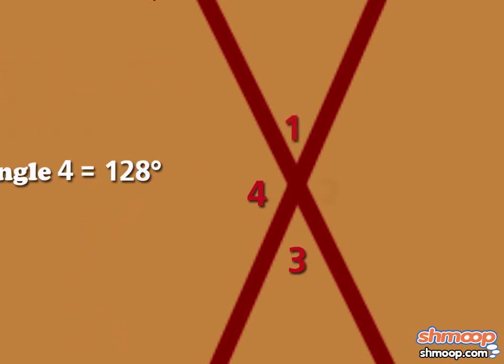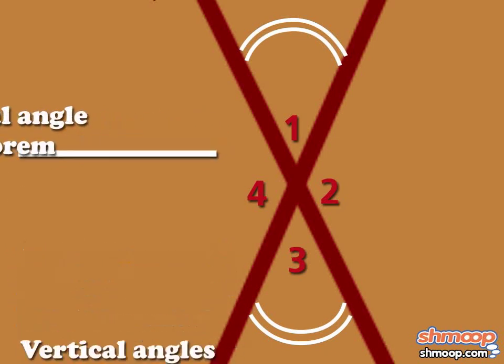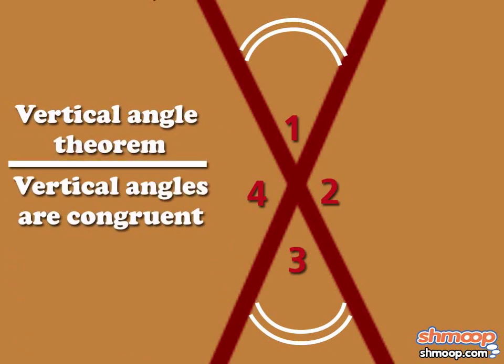So really, vertical angles are any two opposite angles formed by intersecting lines. And the vertical angle theorem says that vertical angles are congruent. In other words, their angles are equal.